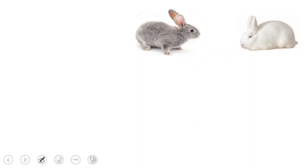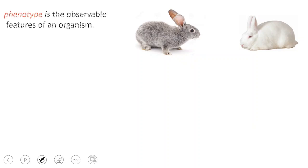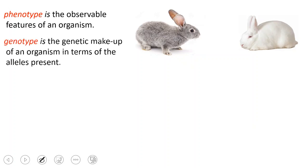Looking at these two rabbits, we have a gray rabbit and a white rabbit. As we said before in the previous lesson, the gray and white are two alleles for the gene that codes for coat color. A phenotype is the appearance of the organism — the observable chemical and physical characteristics. Here I can see the gray and the white. Sometimes it's inside the body, but it's still a phenotype. The genotype is the genetic makeup of an organism in terms of the alleles present — the combination of alleles that make the gray color or the white color.